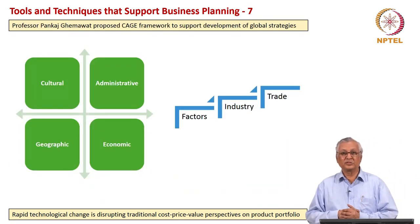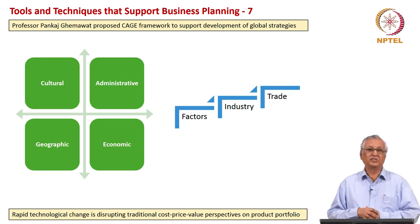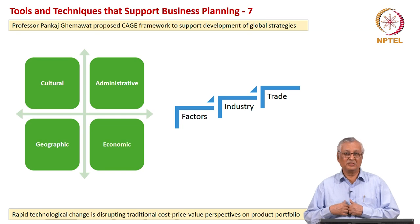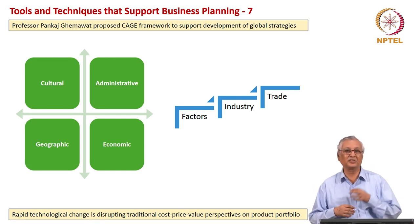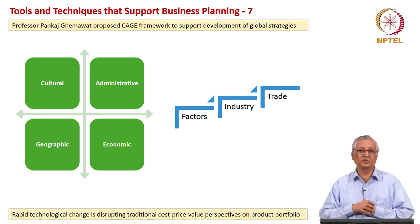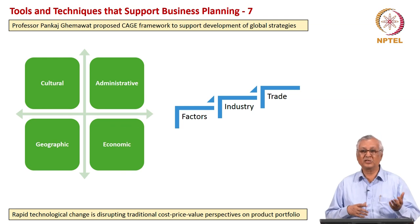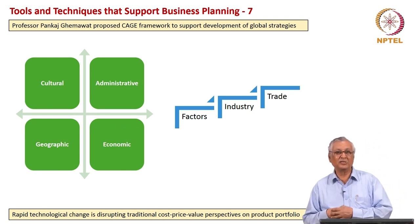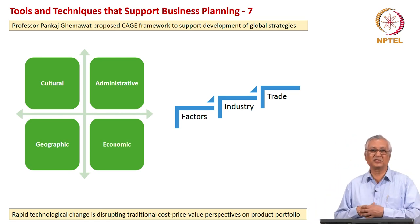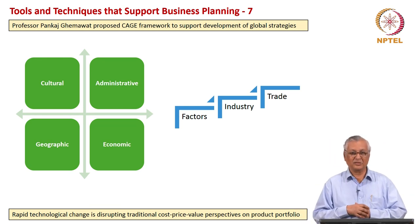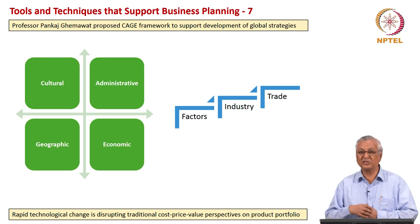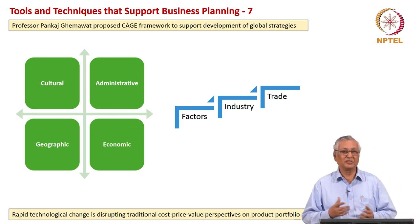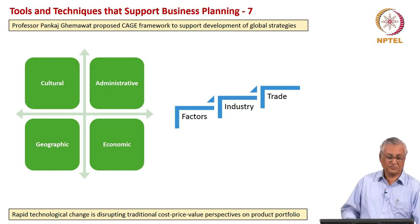Then we have the CAGE framework proposed by Professor Pankaj Ghemawat. He says that the internationalization of manufacturing capabilities or markets cannot be just a product-market match — it is much more than that. You have cultural factors, administrative factors, geographic factors, and economic factors that determine internationalization. It does not mean that if the geography is next to you, internationalization takes place. If the countries are culturally, economically, and politically different, you may need to look at a land 8000 miles distant rather than an 80-mile cross-border opportunity. Therefore the CAGE framework analyzes what factors impact internationalization and what kind of trade can take place.